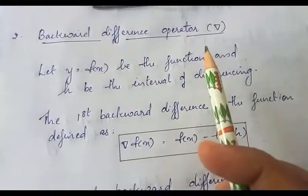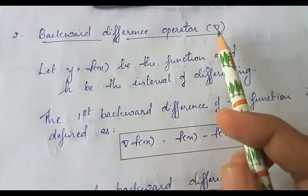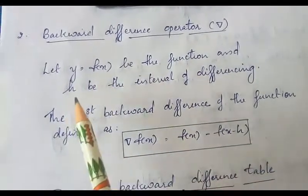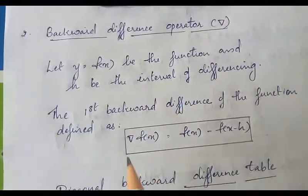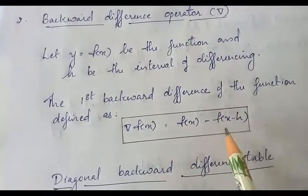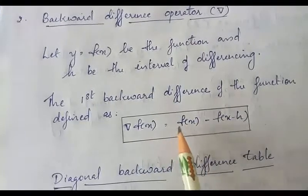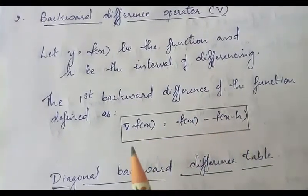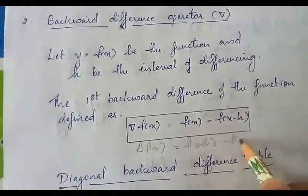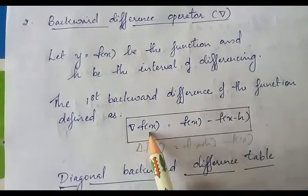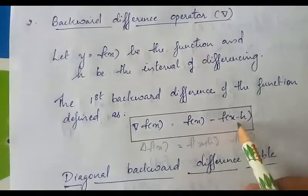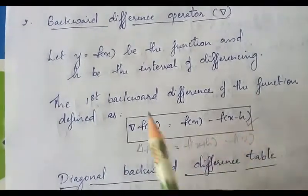The second operator is the backward difference operator, denoted by the notation del. Del represents the backward difference operator. Consider a function y equal to f of x, and let h be the interval of differencing. Then the first backward difference of the function is defined as: del f of x is equal to f of x minus f of x minus h.